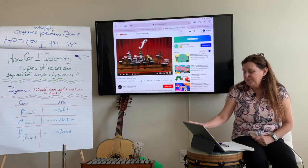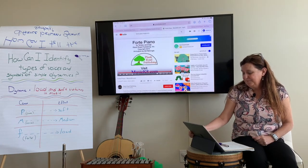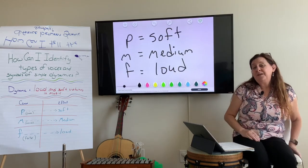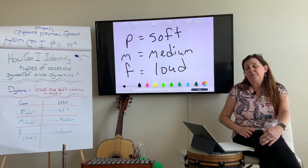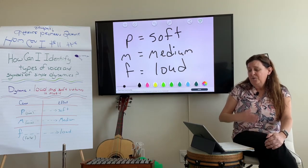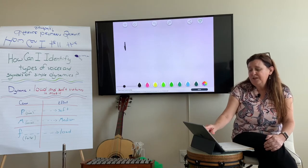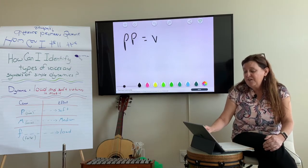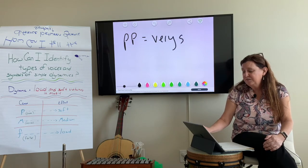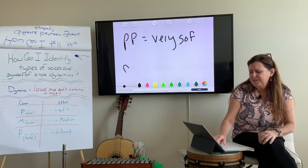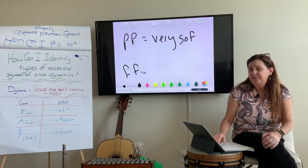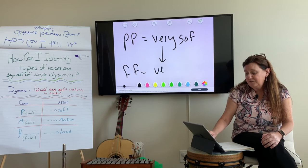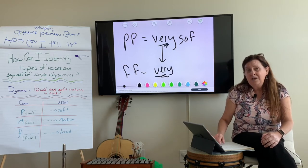Go back to your piece of paper. We had P for soft, M for medium, and F for loud. Well, what if we had two P's? That means very soft. What if we had two F's? What do you think that means? Right — very loud.